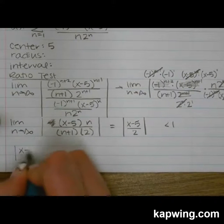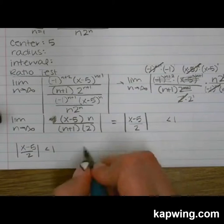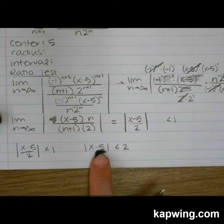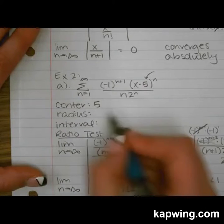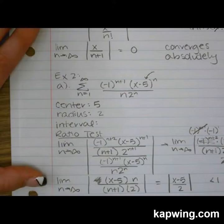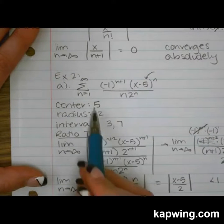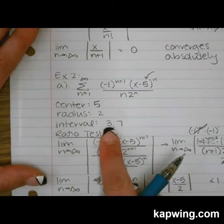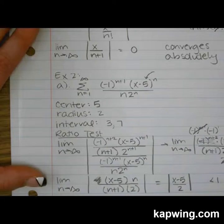We say |x-5| / 2 < 1, multiply by two, so the absolute value of x-5 is less than two. The center was five, and we're within two of that, so the radius of convergence is two. That means the interval of convergence is between three and seven — two down from five, two up from five. Now we have to test the endpoints to see if they should be included.